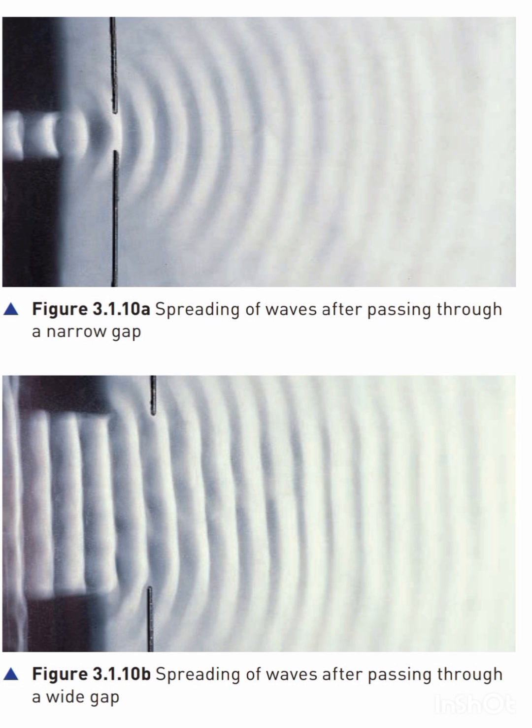The wavefronts that pass through the gap become circular and spread out in all directions. In figure 3.1.10b the gap is wide — 10 centimeters — compared with the wavelength, and the wave continues straight on. Some spreading occurs but it is less obvious — diffraction at the edges.